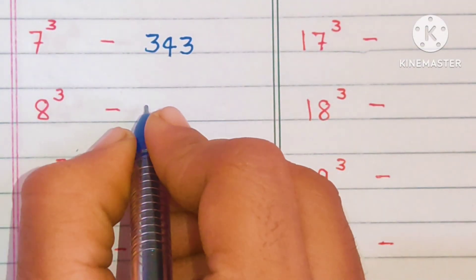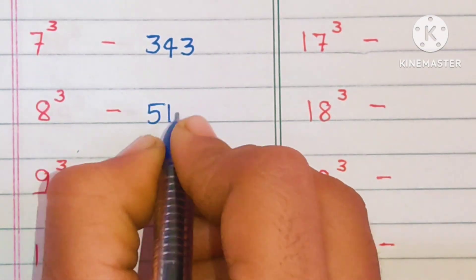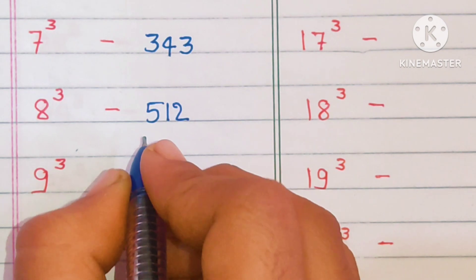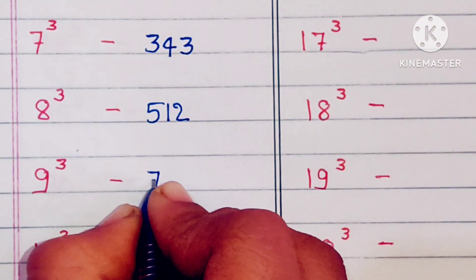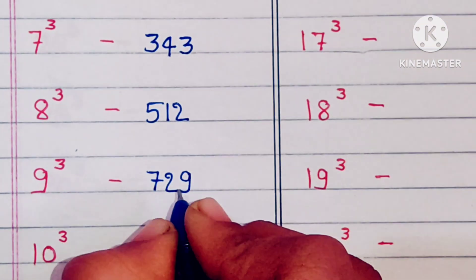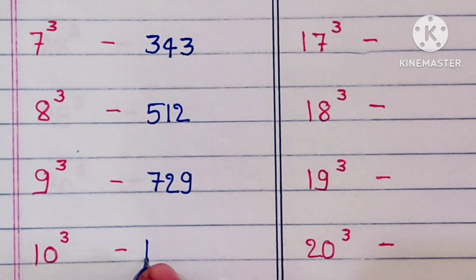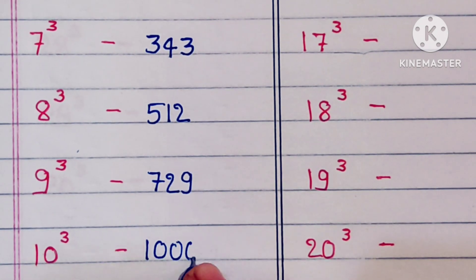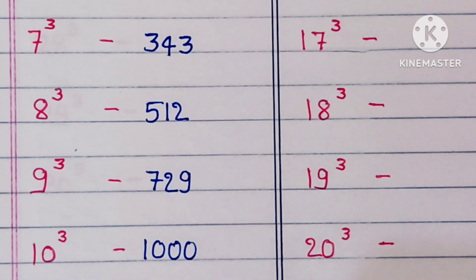8 cube is 512, 9 cube is 729, 10 cube is 1000.